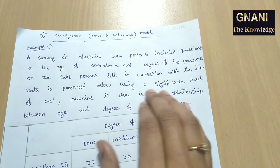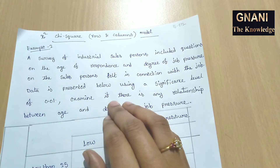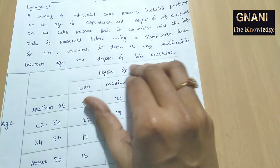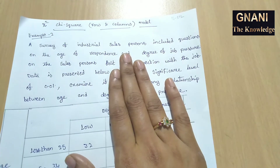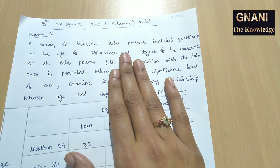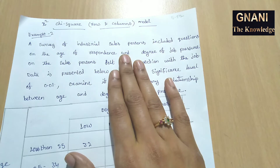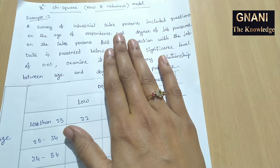Using a significance level of 0.01, examine if there is any relationship between the age and degree of job pressure. So, let's take a look at the job result.